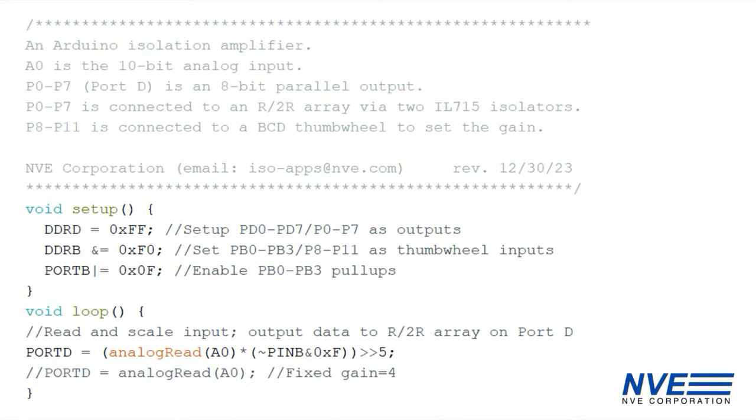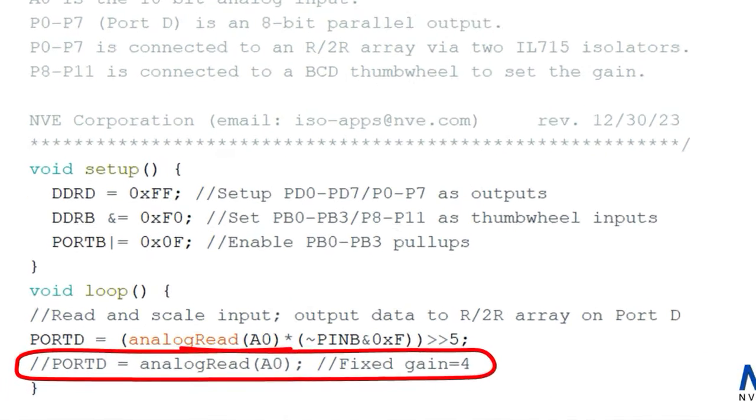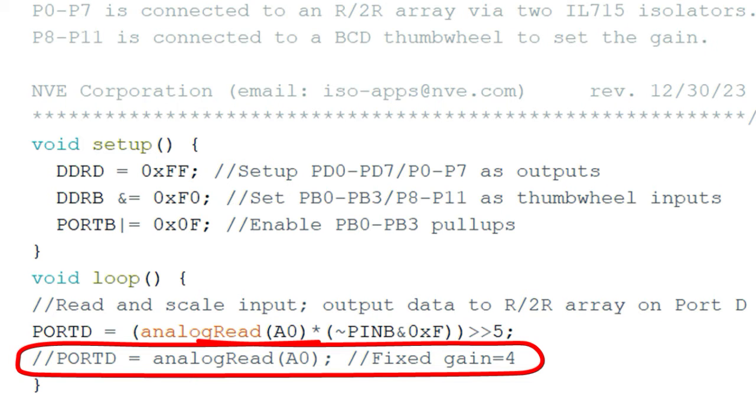Here's the Arduino program. You can use the simple line we commented out for a gain of 4 since the A to D is 10 bits and the D to A is 8 bits.